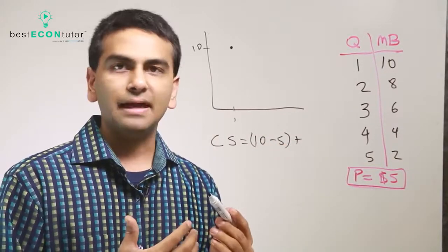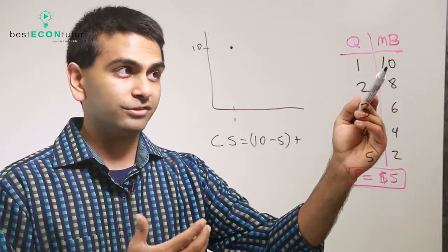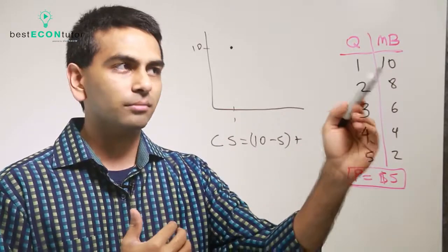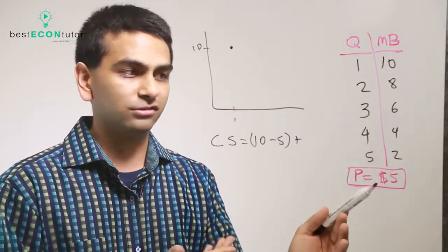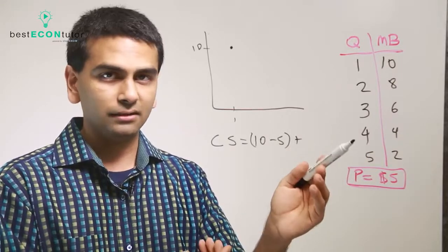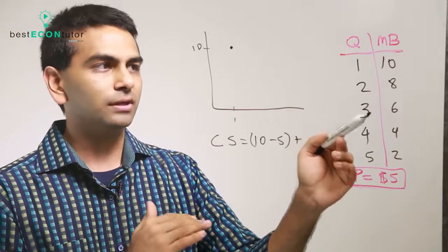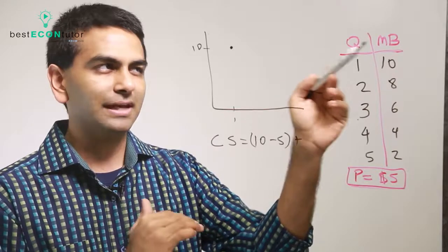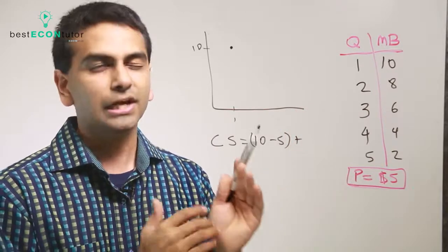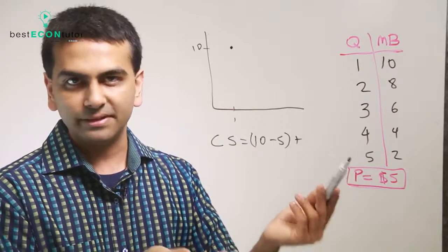Would you buy the second item? Here's the thing: as long as your marginal benefit is greater than the price of the good, you'll buy it. If it were any less, you wouldn't. Even if the marginal benefit equals exactly $5, you'll still buy it — you just get no consumer surplus out of it.